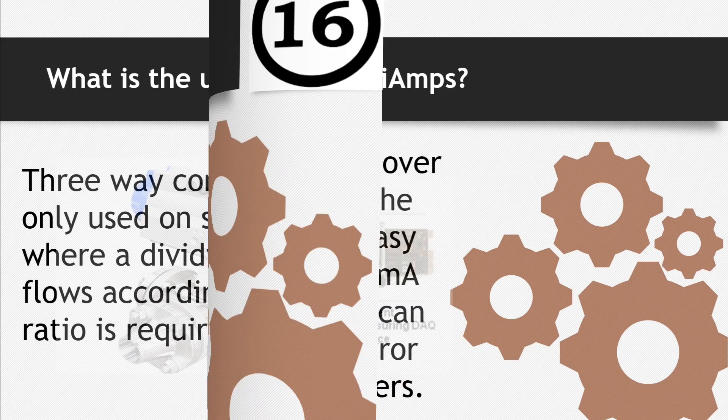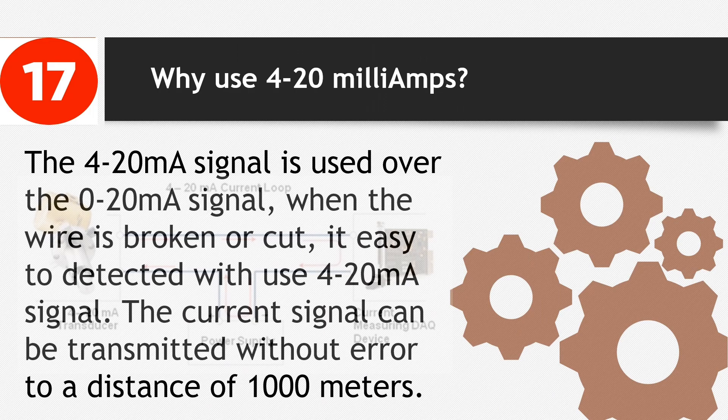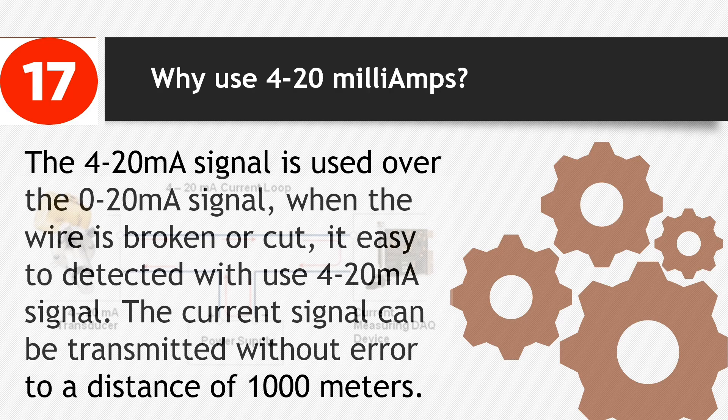Number 17: Why use 4 to 20 milliamps? The 4 to 20 milliamp signal is used over the 0 to 20 milliamp signal. When the wire is broken or cut, it's easy to detect with 4 to 20 milliamp signal. The current signal can be transmitted without error to a distance of 1000 meters.